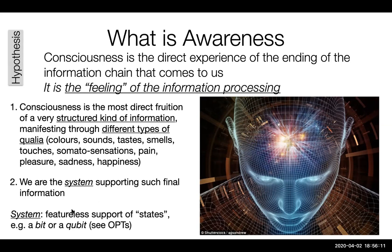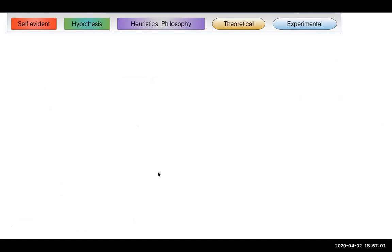We are the system supporting such final information. What is a system? It is something completely featureless which supports states. It is not stuff, not anything with properties or qualities. It is not a thing or an object — it is a connection between things that happen. The system is featureless and supports states. Two typical examples are the bit or the qubit.